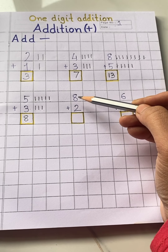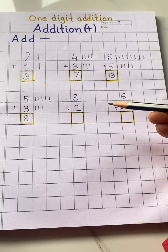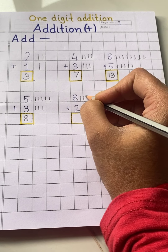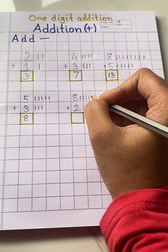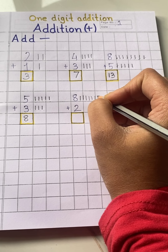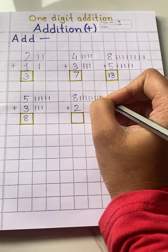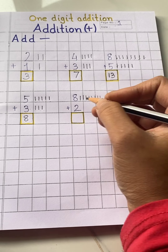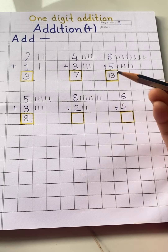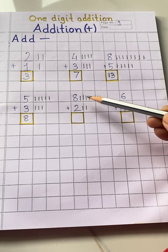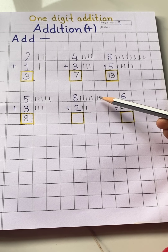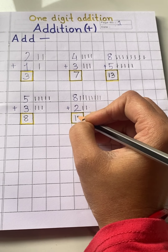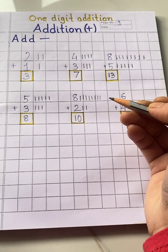Count again: one, two, three, four, five, six, seven, eight. The number is two — make two lines: one, two. Now count all together: one, two, three, four, five, six, seven, eight, nine, ten. Write here ten. Eight plus two is ten.